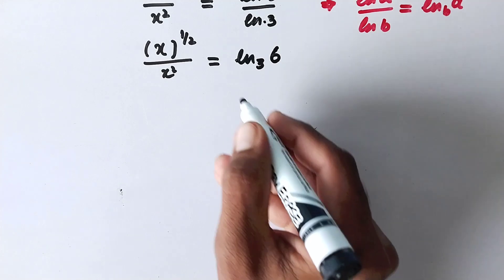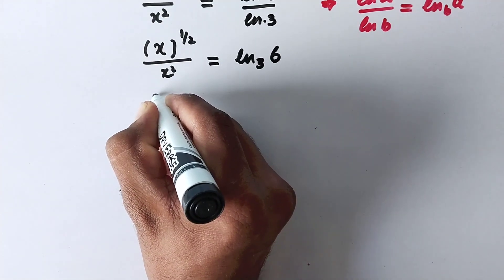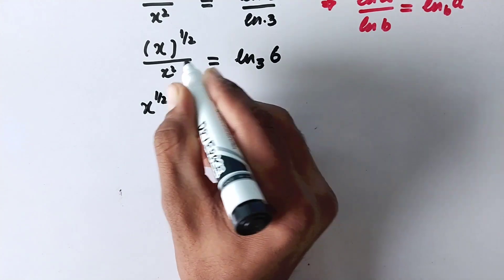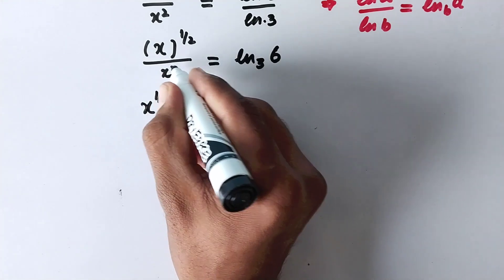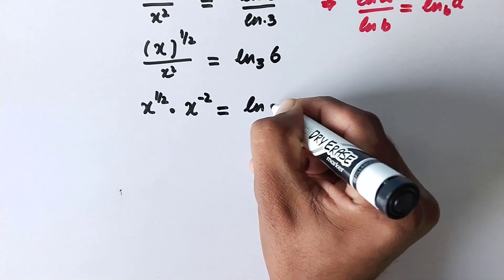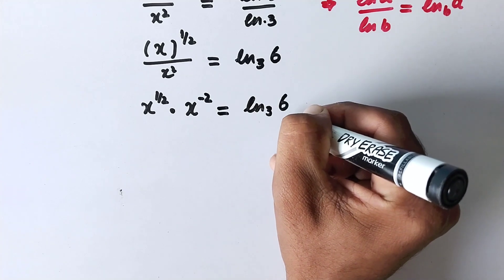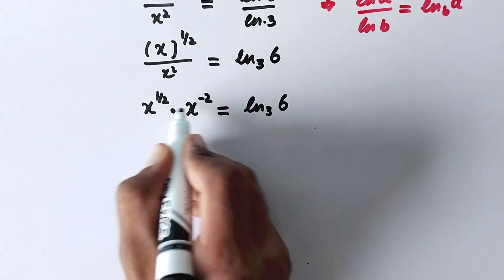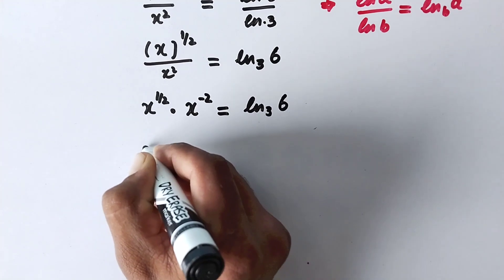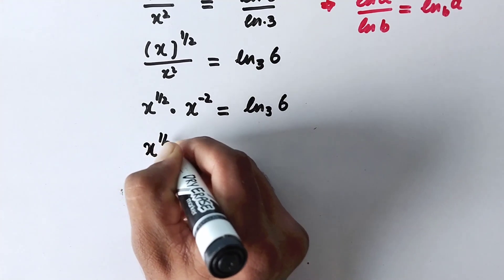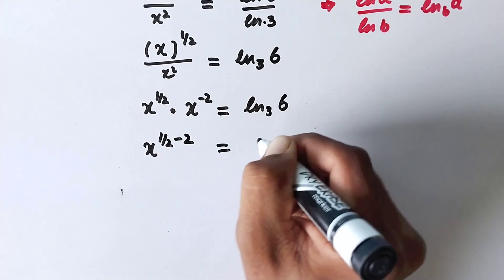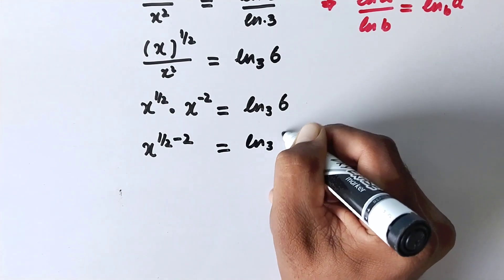So we have ln base 3 of 6. Now we write x to the power 1 over 2 divided by x squared. This x squared can be moved to the left with a negative power. Since the bases are the same and multiplying, we can combine the powers: x to the power 1 over 2 minus 2 equals ln base 3 of 6.